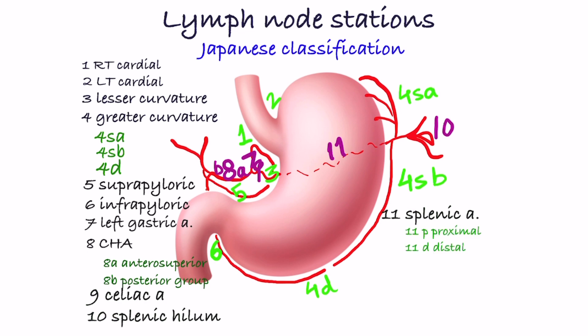Station 12: Hepatoduodenal ligament — 12A along hepatic artery, 12B along bile duct, 12P behind portal vein. Beyond station 12 are considered metastatic nodes in cancer stomach.